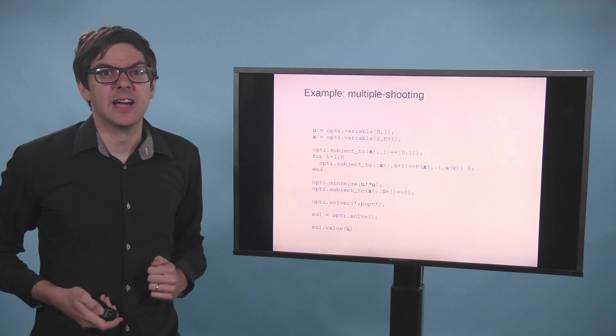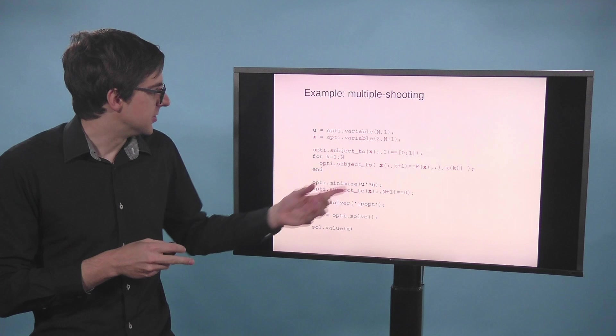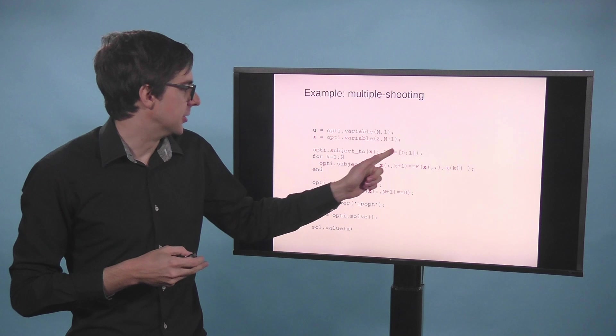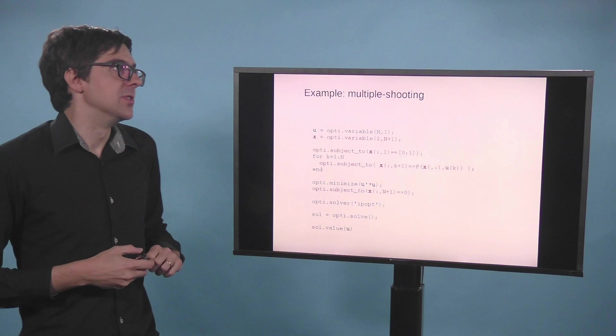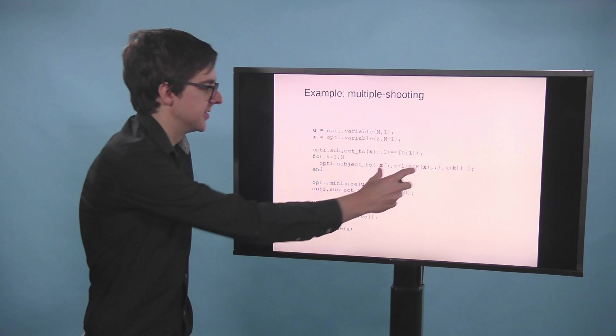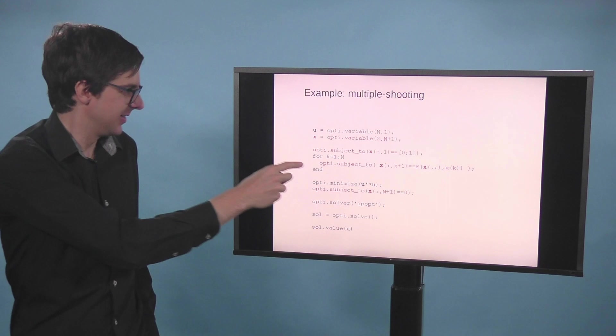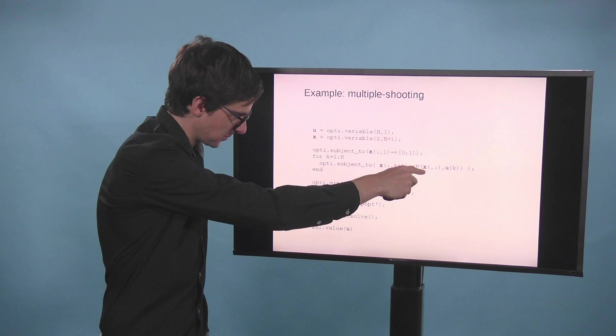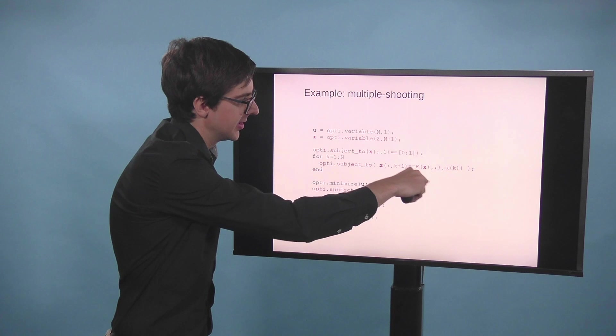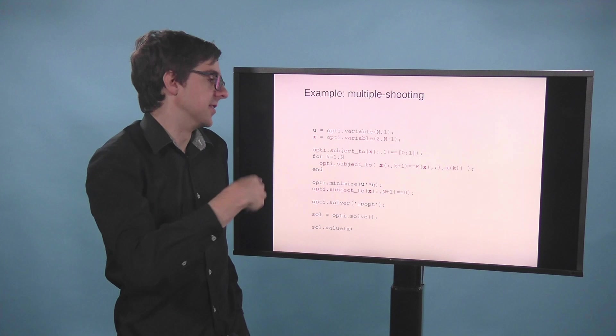Now to put the beginning constraint, we just set the first entry, the first column of x to 0, 1. And then we have the system propagation, which is now put as a constraint. So it's a gap closing constraint. So what we're saying is the state at time k and the control at time k together propagates to a new state. And this should equal the decision variable at k plus 1.